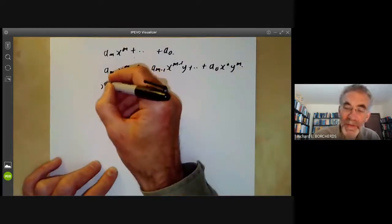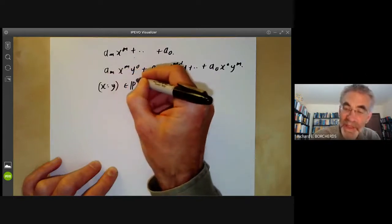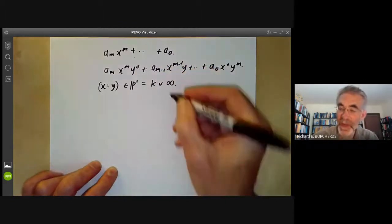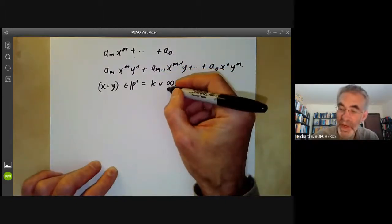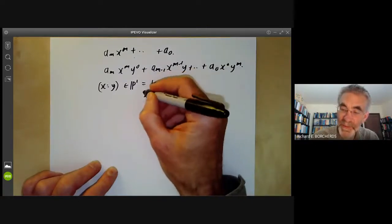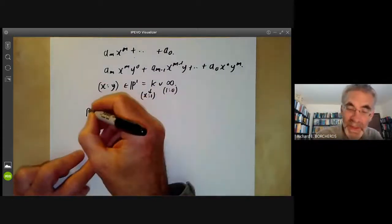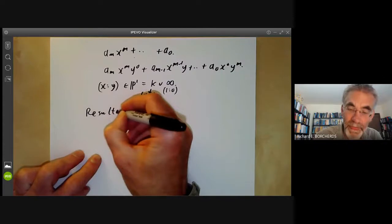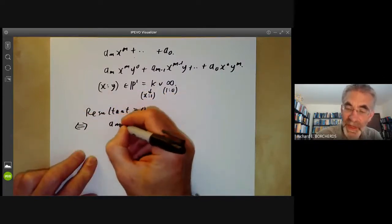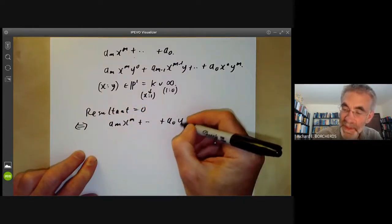And then we can think of a root as being a point in projective space, which is just our field k together with a point at infinity. So the point at infinity will be point when y is 0, and the other points will be x colon 1.